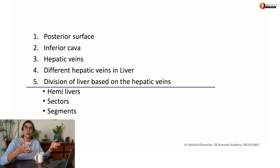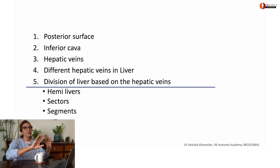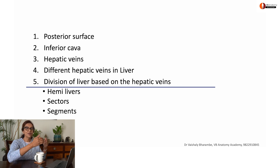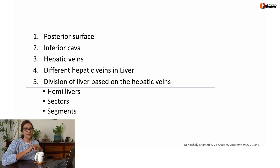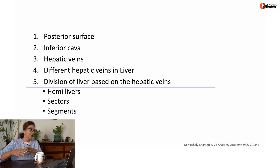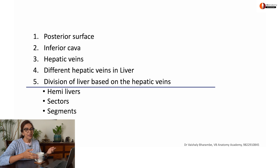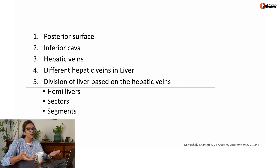Today we will discuss Couinaud segments, for which we will approach the liver from behind, understand the posterior surface and inferior vena cava, hepatic veins draining into the inferior vena cava, how hepatic veins divide the liver into physiological lobes, then hemi livers, then sectors, and then finally the Couinaud segments. That's how we will go about this discussion.